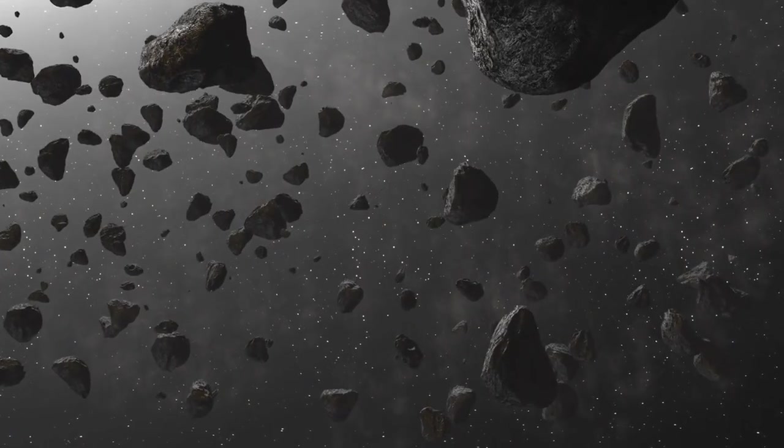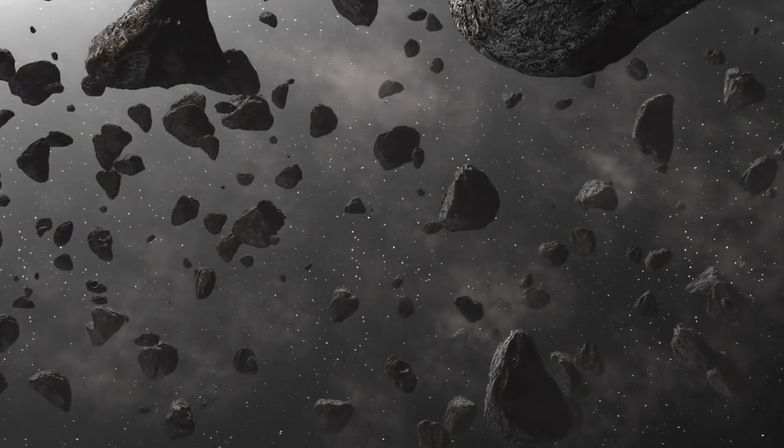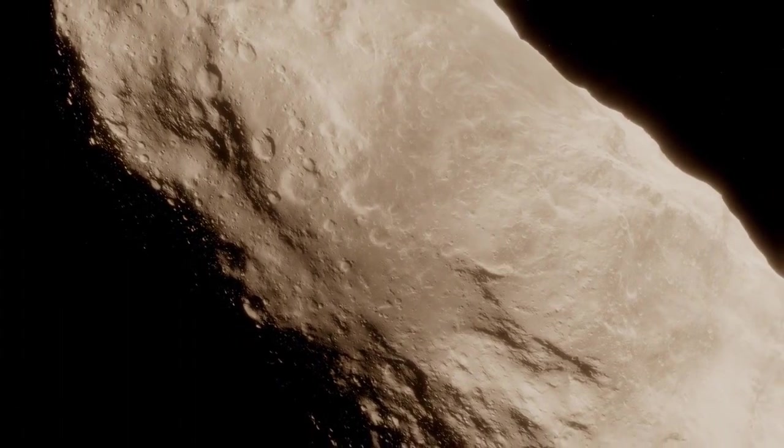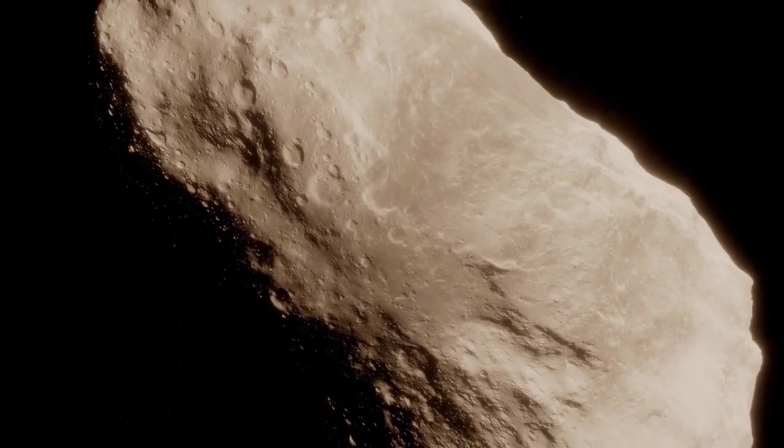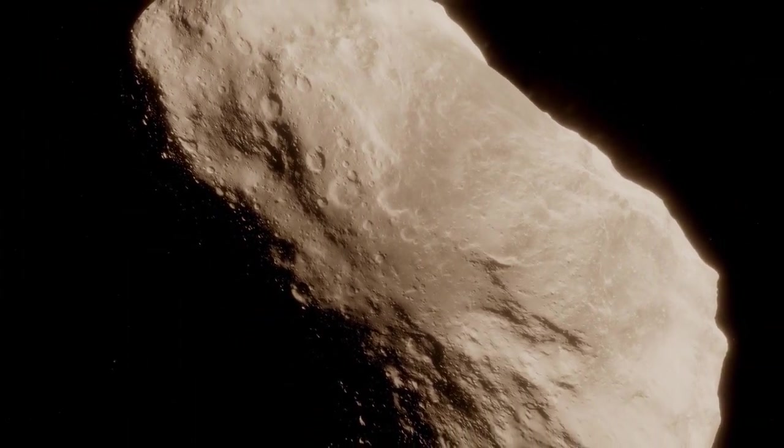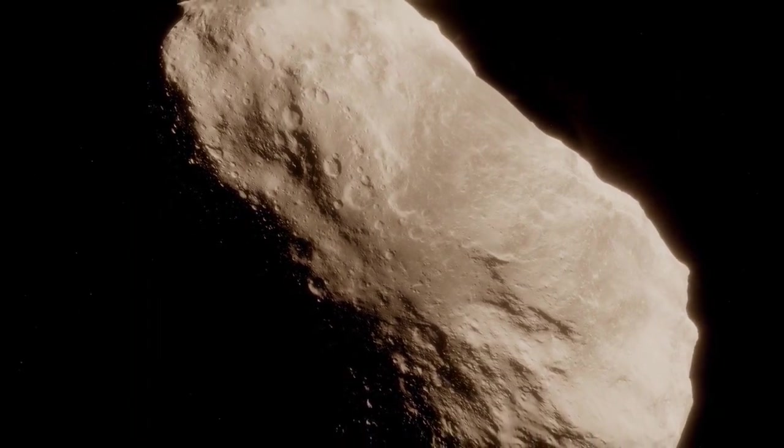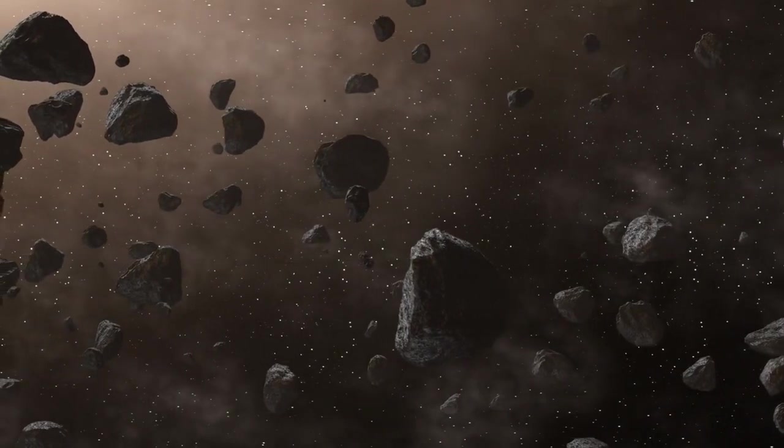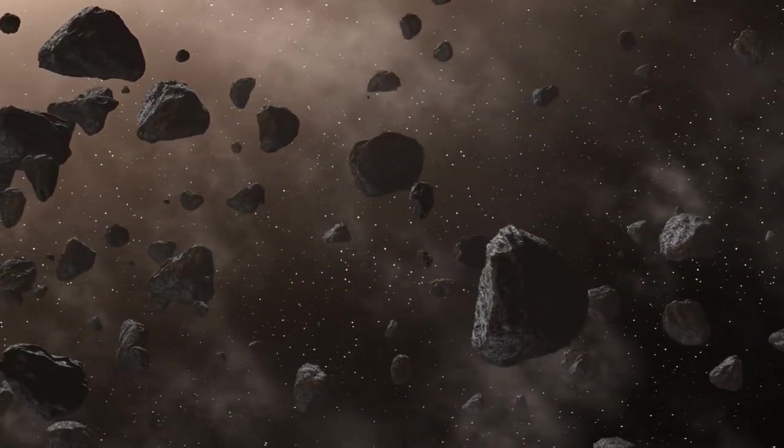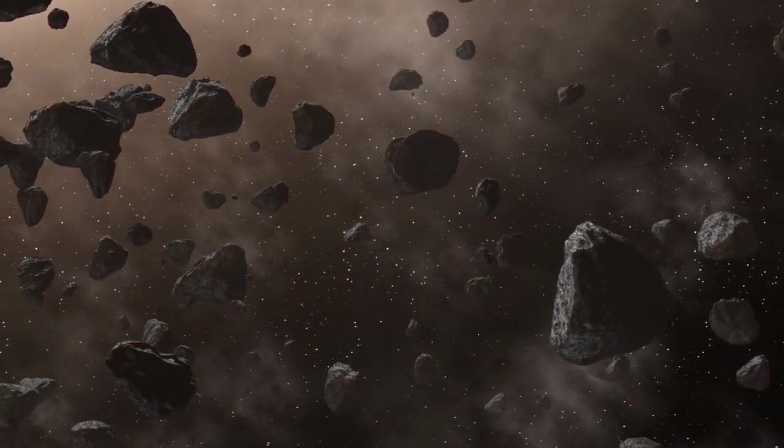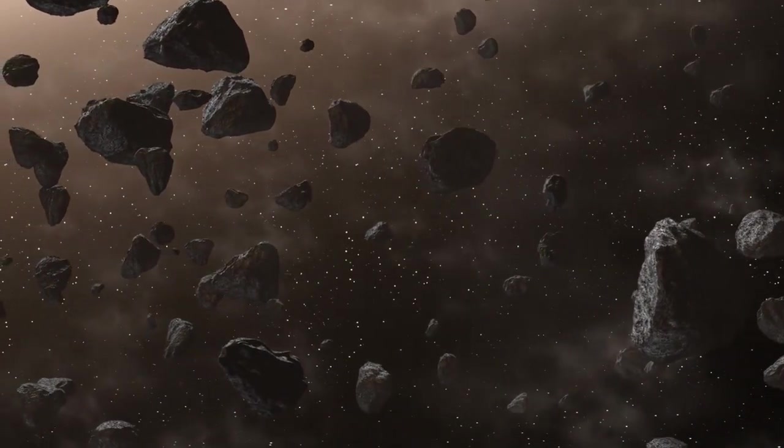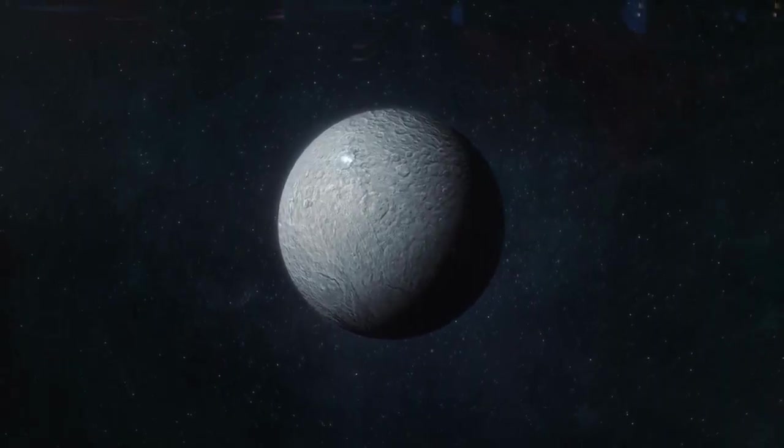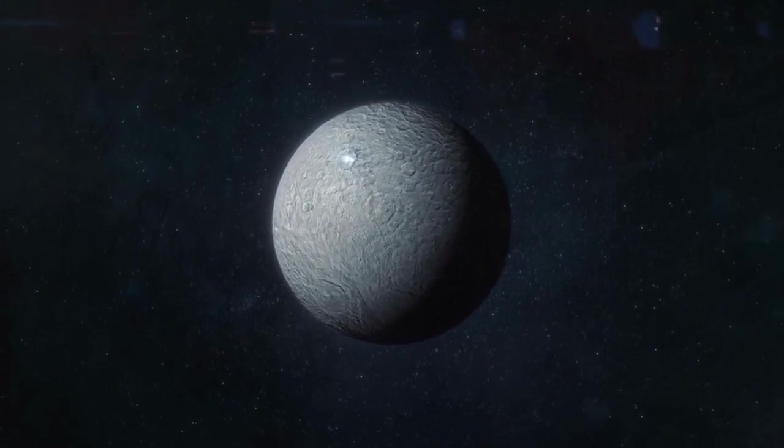The asteroid belt is an incredible cosmic playground, located between the orbits of Mars and Jupiter. It is estimated to contain an astonishing 1 to 2 million asteroids, ranging in size from a few meters to hundreds of kilometers in diameter. Not only is the asteroid belt home to countless asteroids, but it also contains several dwarf planets, including Ceres, Vesta, and Pallas. The largest one, the mighty Ceres, is a whopping 950 kilometers in diameter.